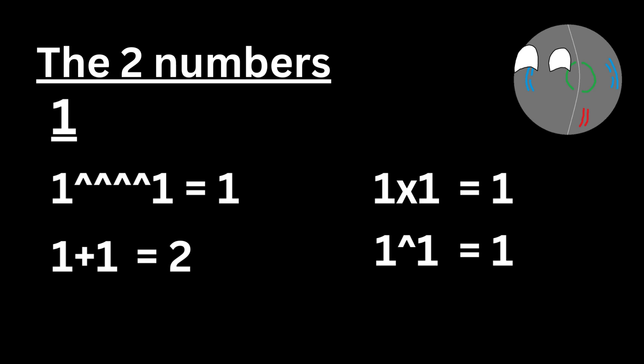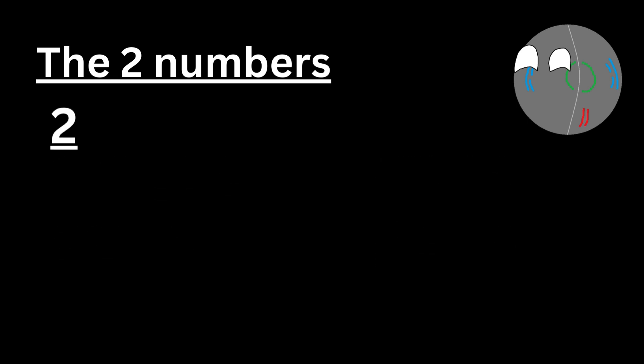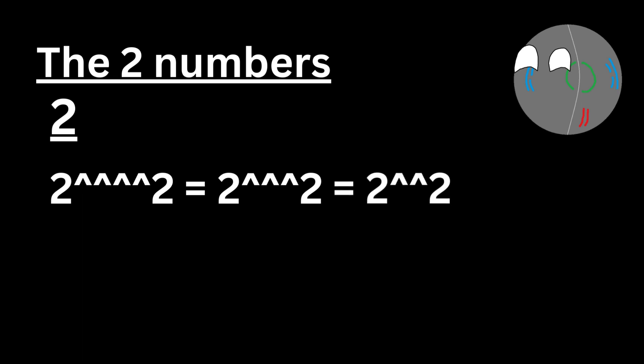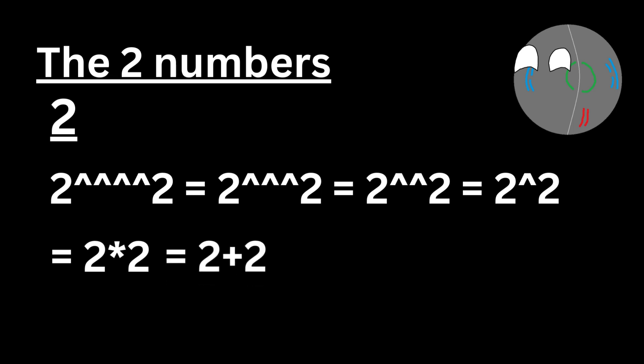The number 2 is also weird in its own way. Two hexated to 2 equals 2 pentated to 2, which equals 2 to the power of 2 = 2 times 2 = 2 plus 2 = 4. So operations creating numbers more gigantic than anything we can use today still produce just 4 when both numbers are a simple 2.